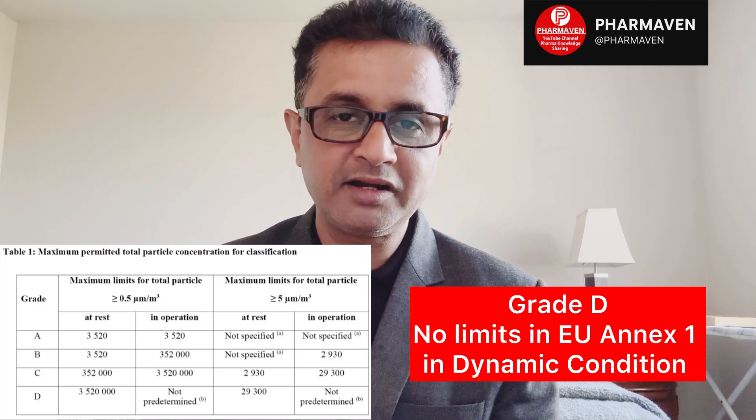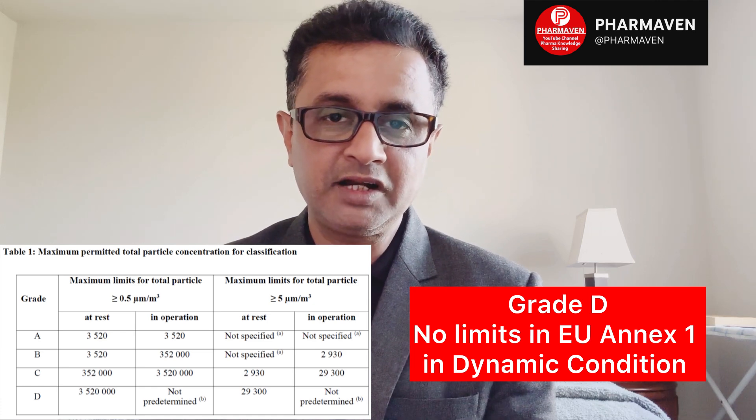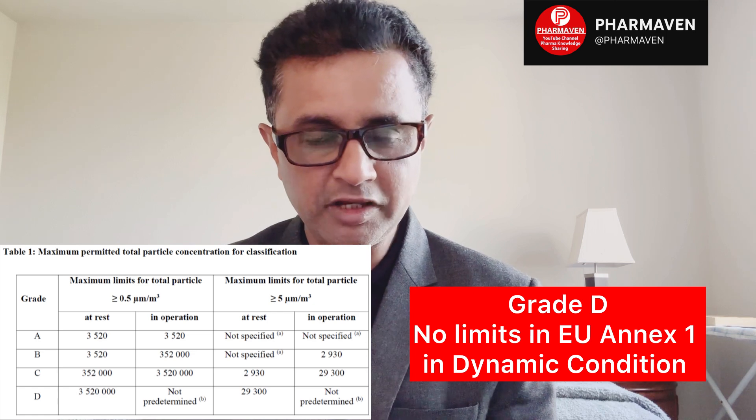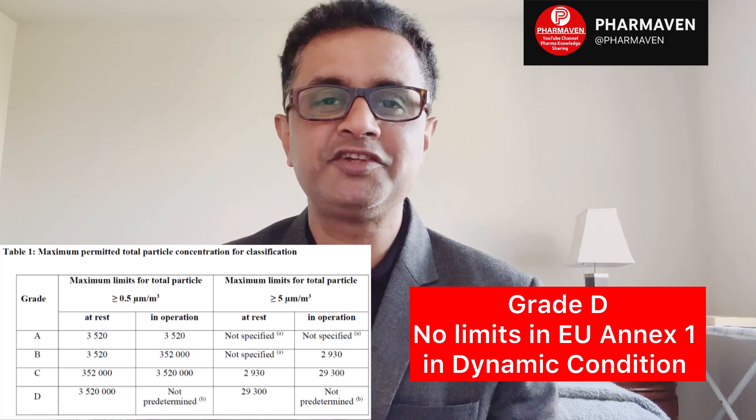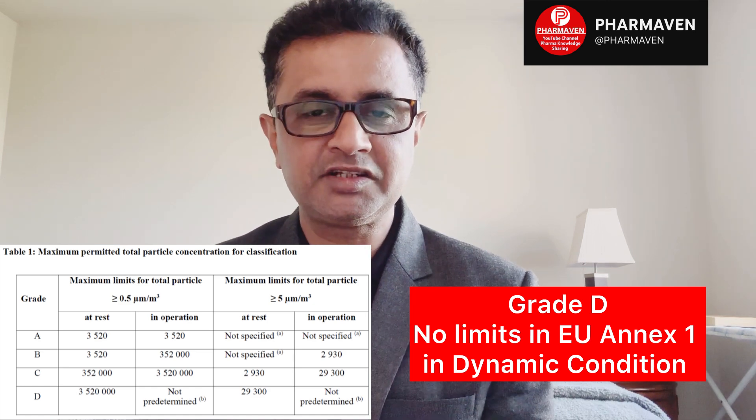Grade C equals Class 100,000, or 3,520,000 particles per cubic meter, or ISO 8, or Grade C in operation as per EU Annex 1. For Grade D, EU Annex 1 does not define any particle count limits for Grade D in operation. At static, Grade D has a limit of 3,520,000 particles per cubic meter, which is the same as Grade C. So Grade D at static corresponds to ISO 8 limits.